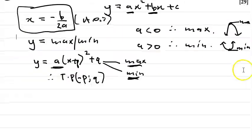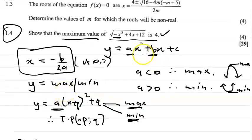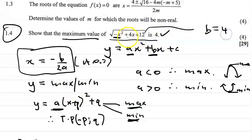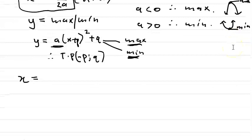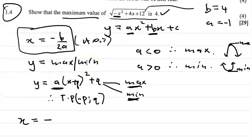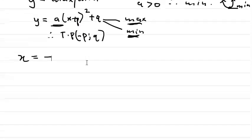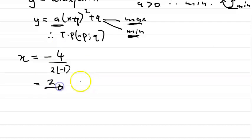Let's do the first method using x equals minus b over 2a. Here b equals 4 (the coefficient of x) and a equals negative 1. So x equals minus 4 over 2 times minus 1, which gives minus 4 over minus 2, which equals 2. So x equals 2 is our axis of symmetry.